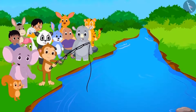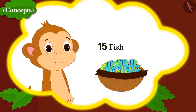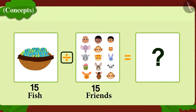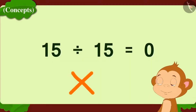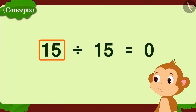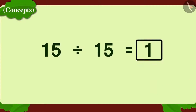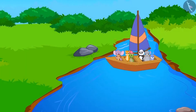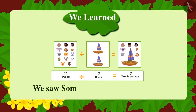Babban caught fifteen fish and thought he would divide them equally among fifteen of his friends. He wrote down the division on paper. But has Babban written this correctly? No — Babban has written it wrong. Whenever we divide a number by itself, the answer will always be one, as every person will get one object each. All friends caught many fish and happily went home. In this lesson, we saw a few concepts about division.